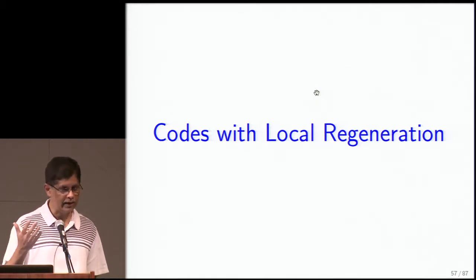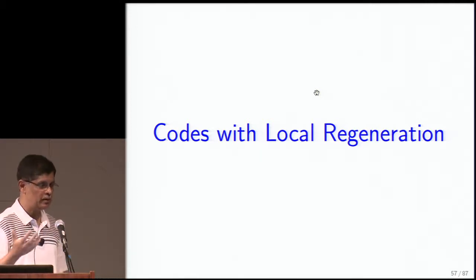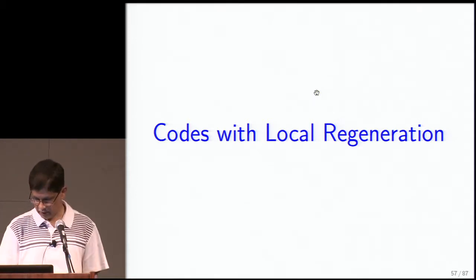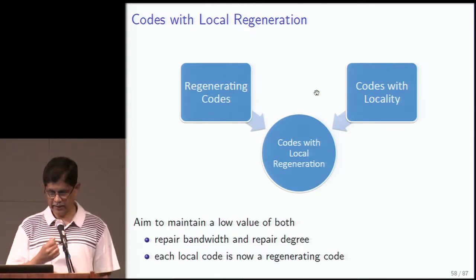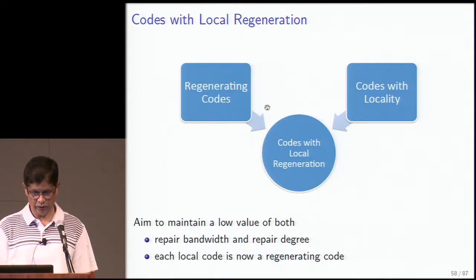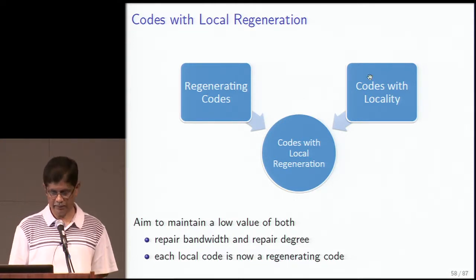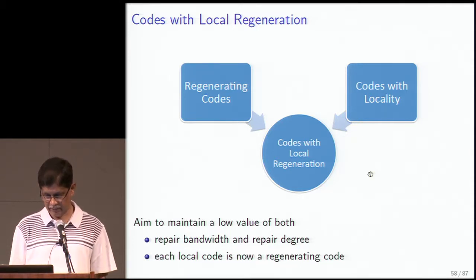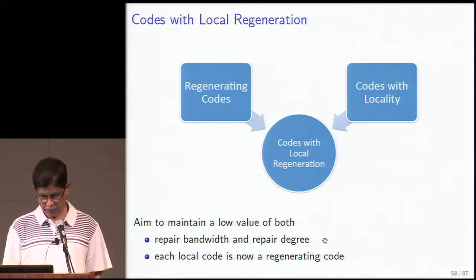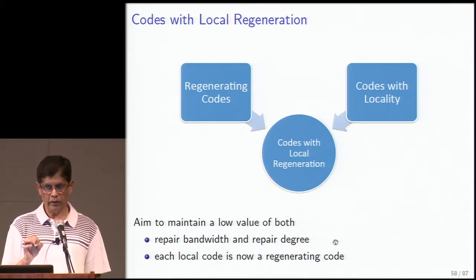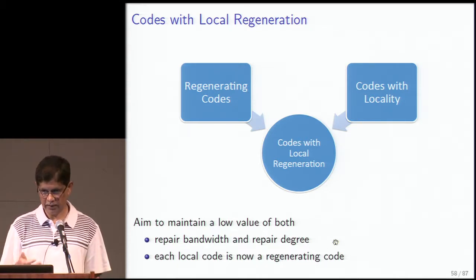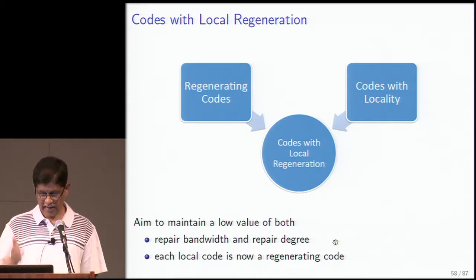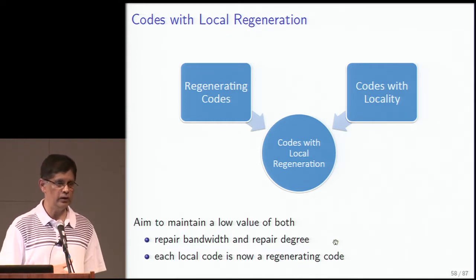At a conference in Ascona, Switzerland in 2012 we found out that the group at UT Austin had also come up with the same idea. This is what we call codes with local regeneration — combining the notions of regenerating codes and codes with locality. The aim is to keep both repair bandwidth and repair degree low. Specifically, each local code instead of being a simple parity-check or MDS code is actually a regenerating code — the local codes are themselves regenerating codes.